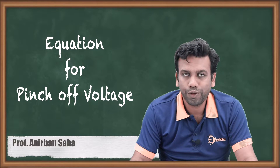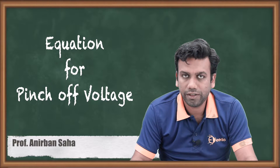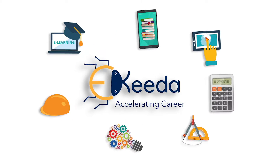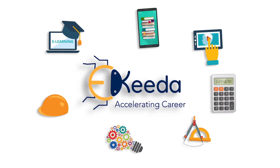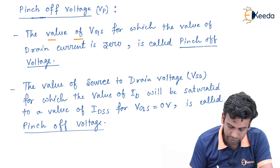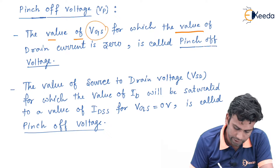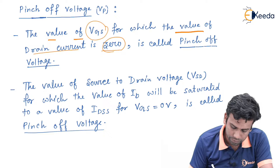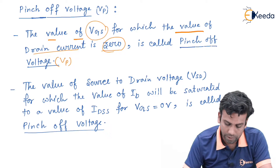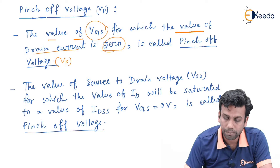Hello friends. In this video we are going to discuss the equation of the pinch-off voltage in a junction field effect transistor. A pinch-off voltage is the value of Vgs for which the drain current Id is 0. It is called the pinch-off voltage or Vp — that means the value of Vgs when Id will be 0.